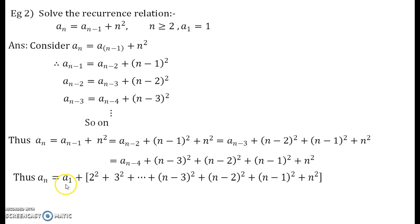So, the pattern here comes down to be an is equals to a1 plus 2 square plus 3 square plus and so on up to n minus 3 the whole square plus n minus 2 the whole square plus n minus 1 the whole square plus n square. Now, what is a1? a1 is nothing but 1.